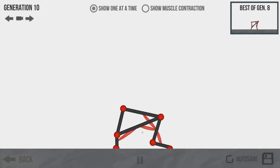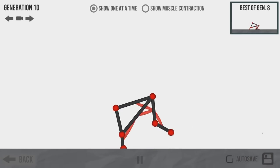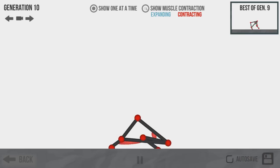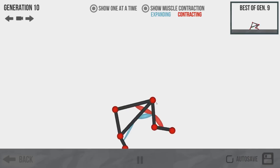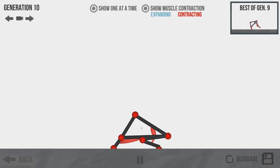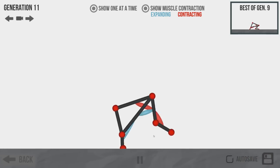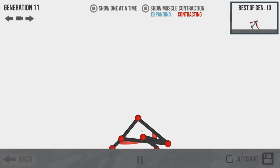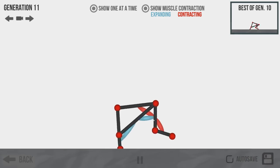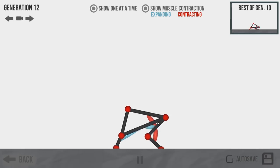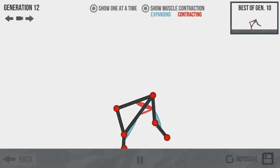What would we call this thing? A reverse frog? A gorf. We're going to call it a gorf because it's frog spelled backwards. This is best of generation eight. Now at what point do we have to do it in a certain amount of time? Show muscle contraction. One muscle's not even used.